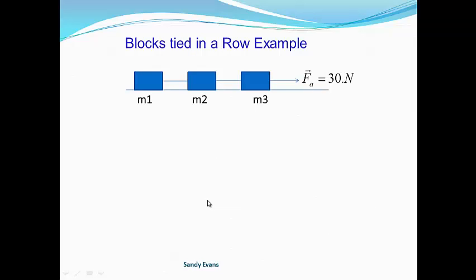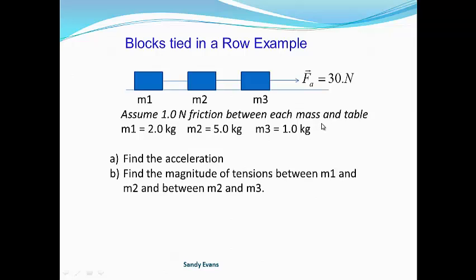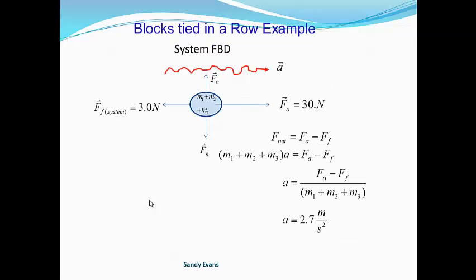Now let's do one more example. We're going to look at three boxes tied in a row. We need to find the acceleration and the magnitude of the tensions between all the masses — mass 1, mass 2, and mass 3. Because there are three masses, I'm going to solve it as one system to find acceleration rather than have three separate equations. Then we'll separate out the free bodies to find the tension.